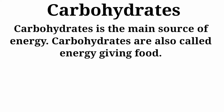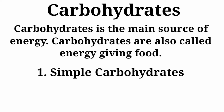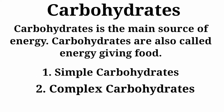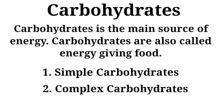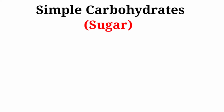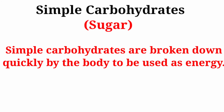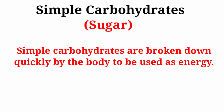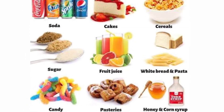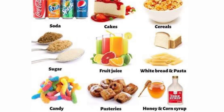Carbohydrate is of two kinds: simple carbohydrate and complex carbohydrate. Simple carbohydrate means sugar. Simple carbohydrates are the carbohydrates that are broken down quickly by the body to be used as energy. Simple carbohydrates are found in food such as fruits, milk, candy, soft drinks, etc.